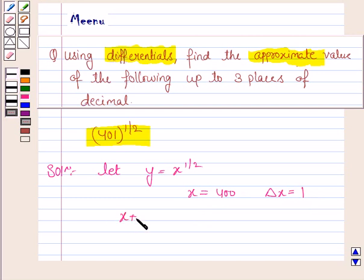So x plus delta x is equal to 401. Now we know that delta y is equal to f of x plus delta x minus fx. So this is x plus delta x to the power 1 by 2 minus x to the power 1 by 2.